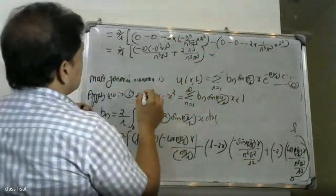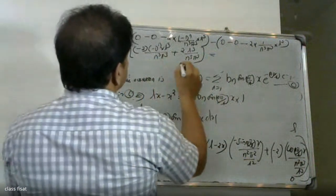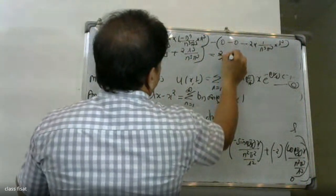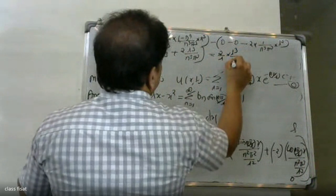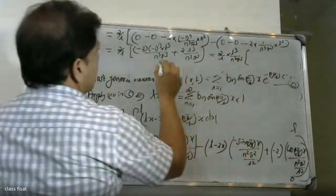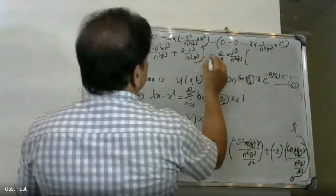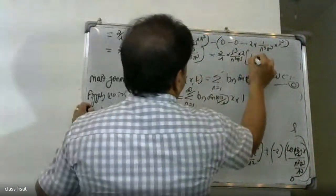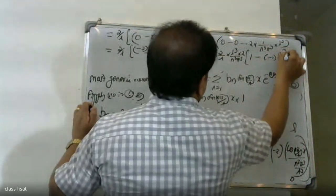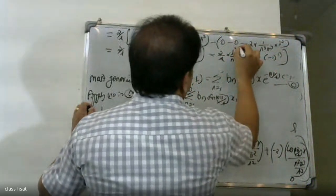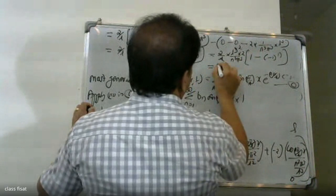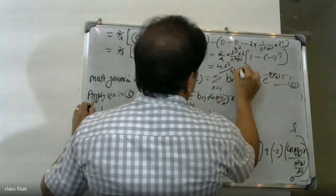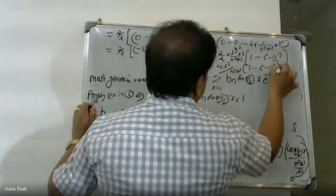The common factor is 2/L times L³/n³π³, which equals 4L²/n³π³. Therefore Bn = (4L²/n³π³)·(1 − (−1)^n).